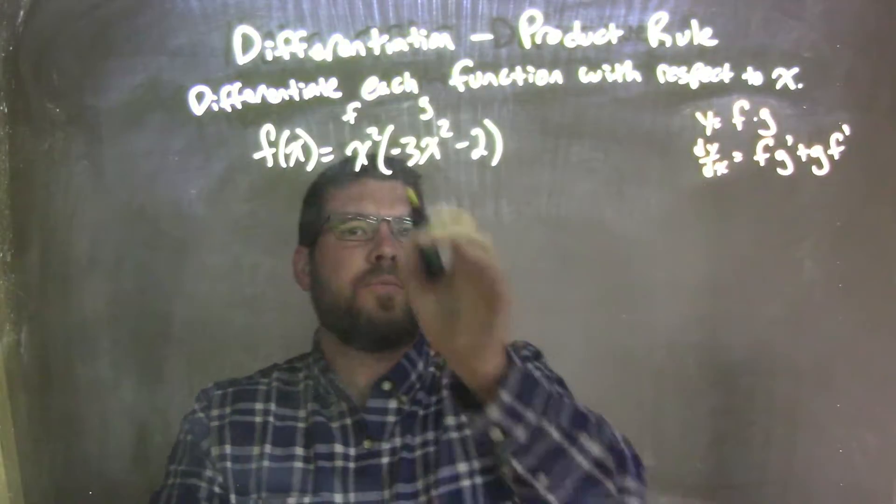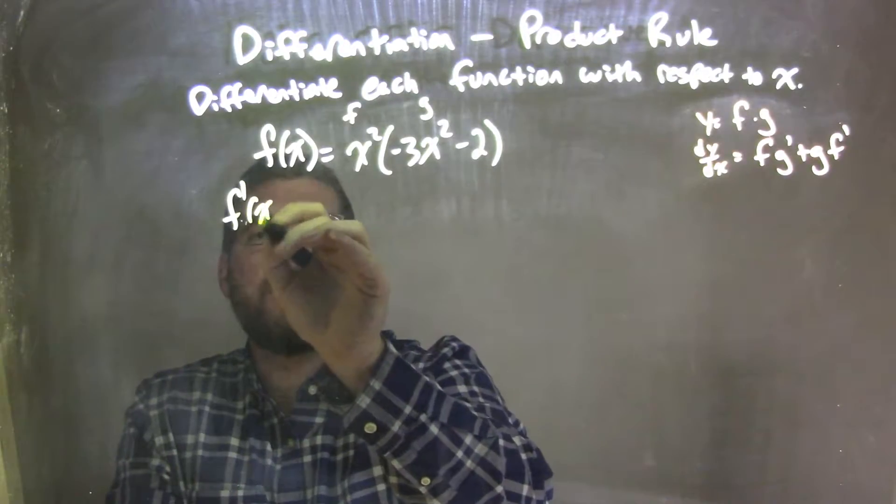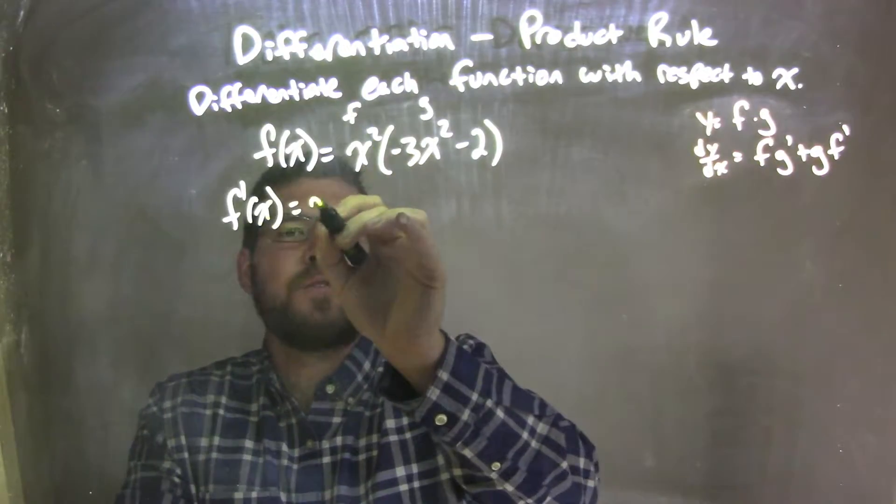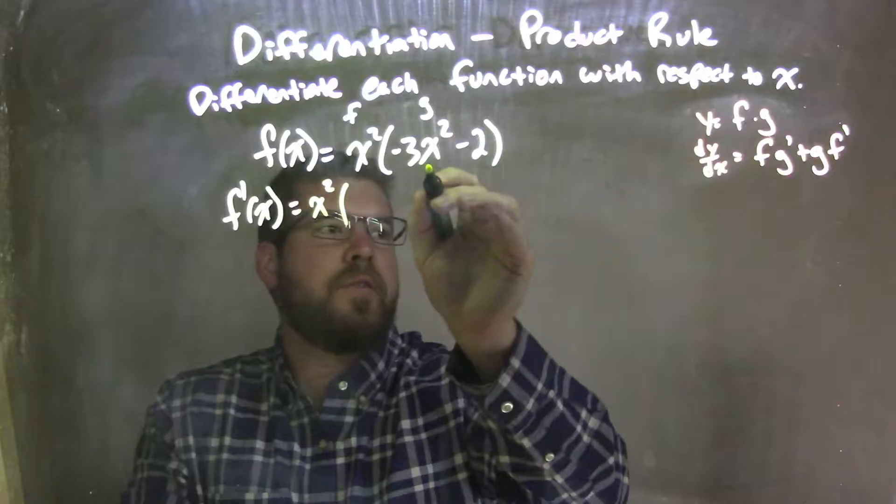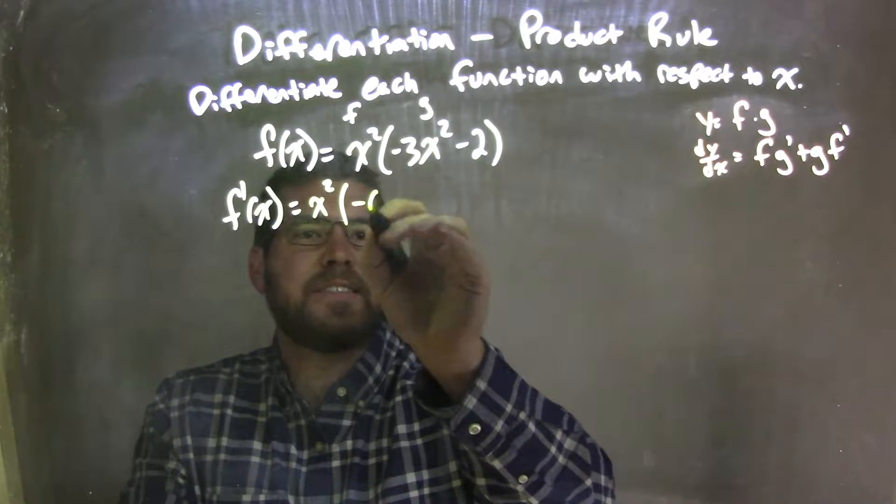Now to apply the product rule, because there's multiplication going on as a product rule, f prime of x, when I take my derivative, I have the first part, let's go apply it right here. Keep my original function, first part, f,